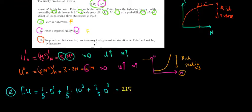So suppose that we can buy an insurance that guarantees us an income of 5. Are we going to buy or are we going to not buy the insurance? Well, let's see.